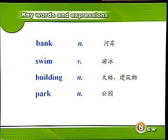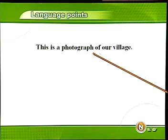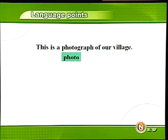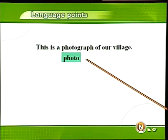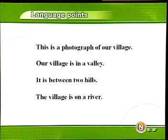好，我们一起来看本课当中的主要语言点。This is a photograph of our village. 在每一段的开头都有这样的一句话，来说明这是我们村庄的一张照片，a photograph of our village. Photograph 在口语当中还可以简略地说成 photo. Our village is in a valley. 我们的村庄在山谷里。It is between two hills. 它在两座小山之间。The village is on the river，村庄呢，靠近一条小河。